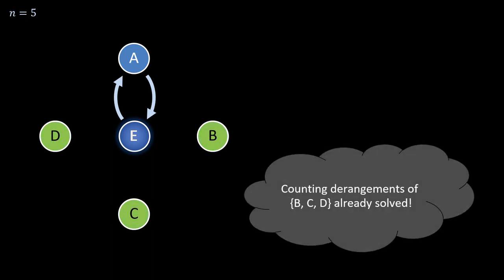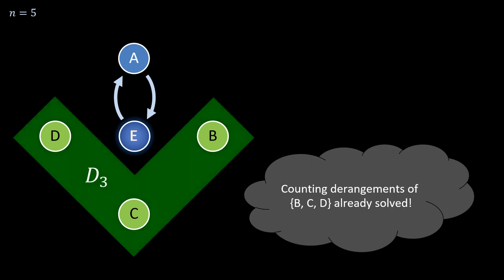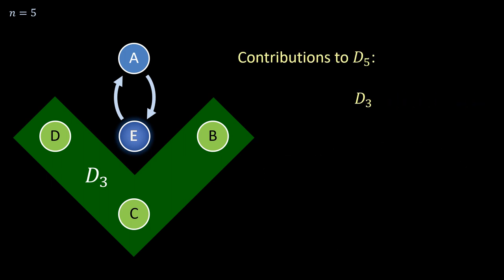An important insight at this point is that the problem of counting derangements within the subset containing b, c and d has already been solved and labelled as D_3, the number of derangements of a three-element set.